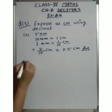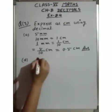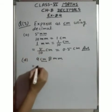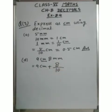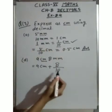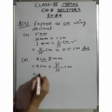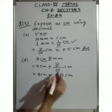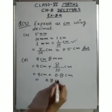B and C parts are the same. Now D part: 9 centimeters 8 millimeters. 9 centimeters is already in centimeters, so we write it as it is. To convert 8 millimeters to centimeters, we divide by 10: 8 upon 10 = 0.8 centimeters. So 9 + 0.8 = 9.8 centimeters.